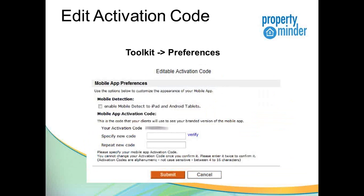Let's talk about activation codes. The activation code is what ties the consumer to you. There are two types available. The first type is an activation code that you specify. If you go into your PropertyMinder toolkit in the preferences tab, there's a place where you can edit your activation code. Make it something you can easily remember, and get in there as soon as possible because each code can only be used one time. Set that vanity code while they're still open - we're new with this technology.